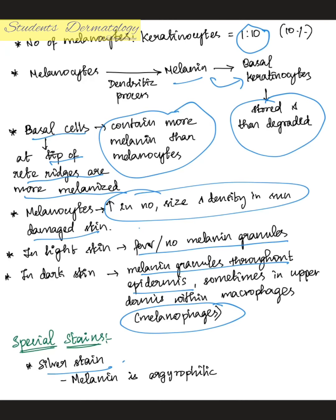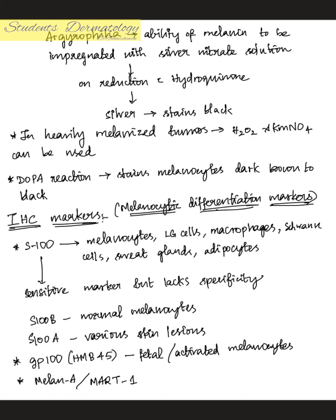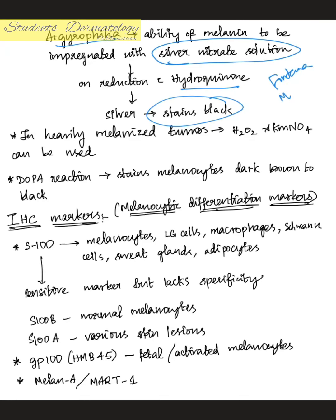Regarding special stains: number one is the silver stain, as melanin is argyrophilic. Argyrophilia is the ability of melanin to be impregnated with silver nitrate solution which, on reduction with hydroquinone, stains black — this is called the Fontana-Masson method. In heavily melanized tumors, strong oxidizing agents like hydrogen peroxide and potassium permanganate can be used to visualize the melanin.